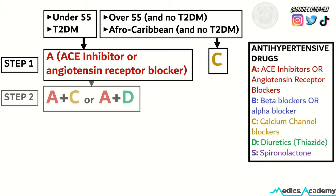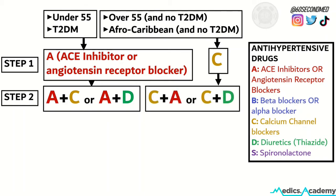If the patient is still hypertensive, we move on to step 2. If they're already on the ACE inhibitor or the angiotensin receptor blocker, add a calcium channel blocker or add a diuretic. If the patient's already on a calcium channel blocker, add the ACE inhibitor or angiotensin receptor blocker, or add a diuretic.